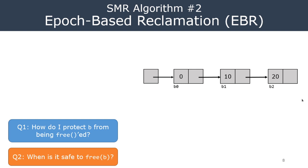Let me explain EBR in more detail. Recall that all SMR algorithms need to answer two questions. The first question is: how do I protect block B from being freed from the accessor's point of view? The second question is: when is it safe to free B from the modifier's perspective? These two aspects synchronize with each other, and if done correctly, we can safely reclaim memory after all accesses are finished.